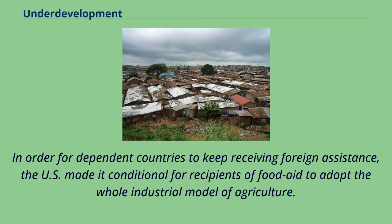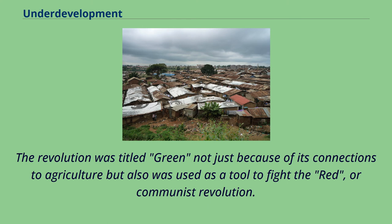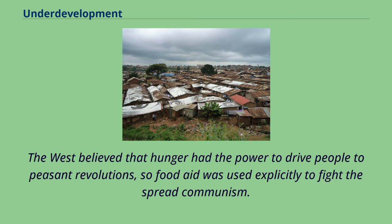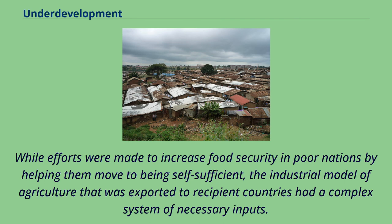In order for dependent countries to keep receiving foreign assistance, the U.S. made it conditional for recipients of food aid to adopt the whole industrial model of agriculture. The revolution was titled 'green' not just because of its connections to agriculture, but also because it was used as a tool to fight the 'red,' or communist, revolution. The West believed that hunger had the power to drive people to peasant revolutions, so food aid was used explicitly to fight the spread of communism.